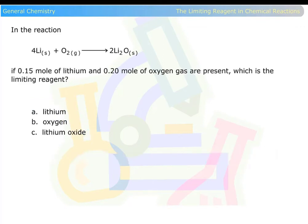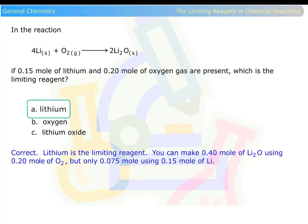In the reaction, lithium plus oxygen is equal to lithium oxide. If 0.15 mole of lithium and 0.2 mole of oxygen gas are present, which is the limiting reagent? Lithium is the limiting reagent. You can make 0.4 mole of lithium oxide using 0.2 mole of oxygen, but only 0.075 mole using 0.15 mole of lithium.